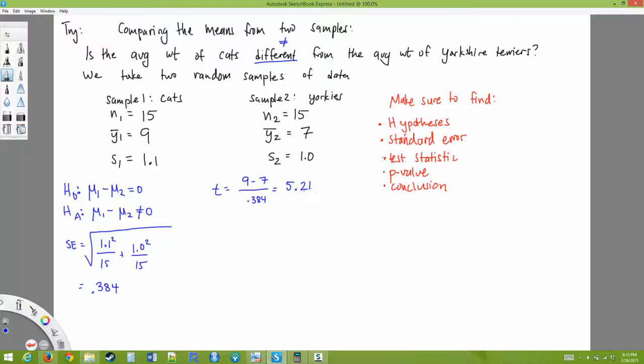Okay, so that is my test statistic, okay? And we look this up in our t-table, and I should say my degrees of freedom is going to be 15 plus 15 minus 2. So I have 28 degrees of freedom.